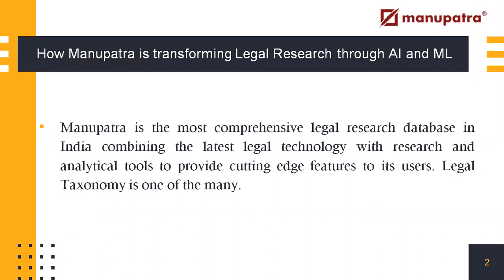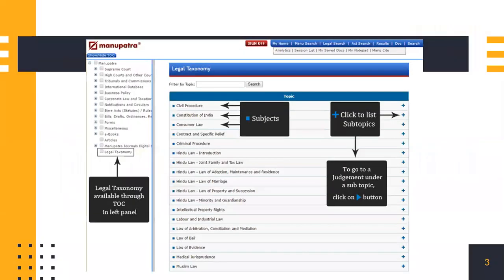Legal taxonomy is one of the many features available. This is how legal taxonomy looks. It is available through the table of contents found in the left panel, which opens a list of subjects. You can click on the plus icon to find the list of subtopics.